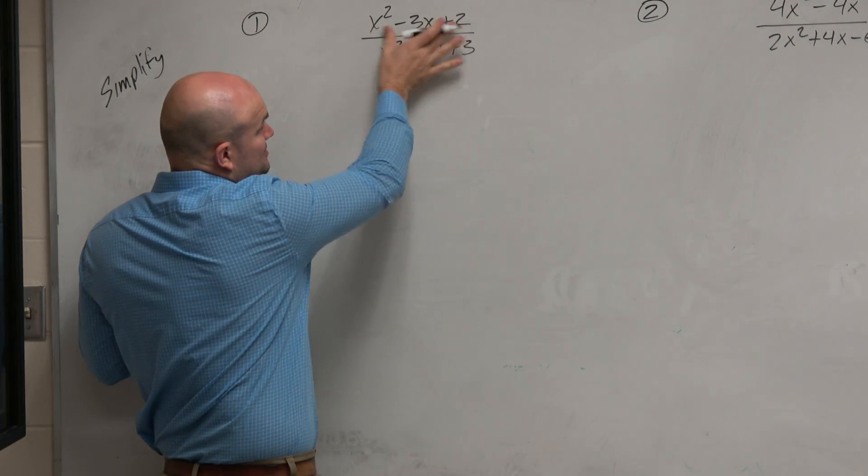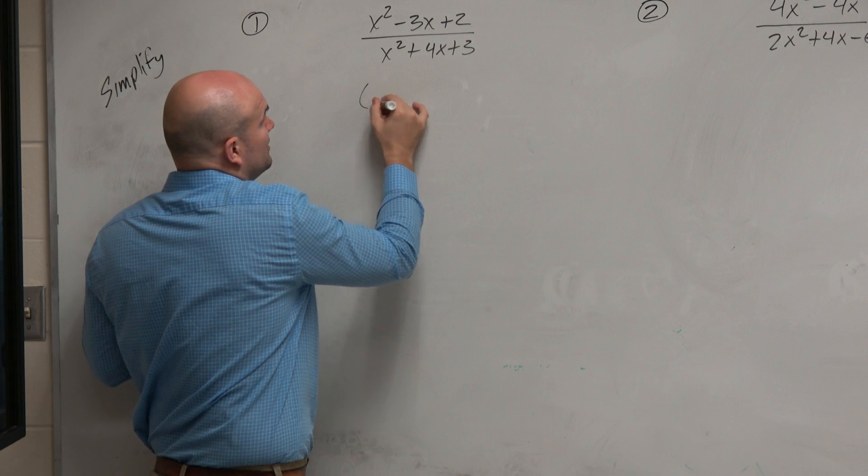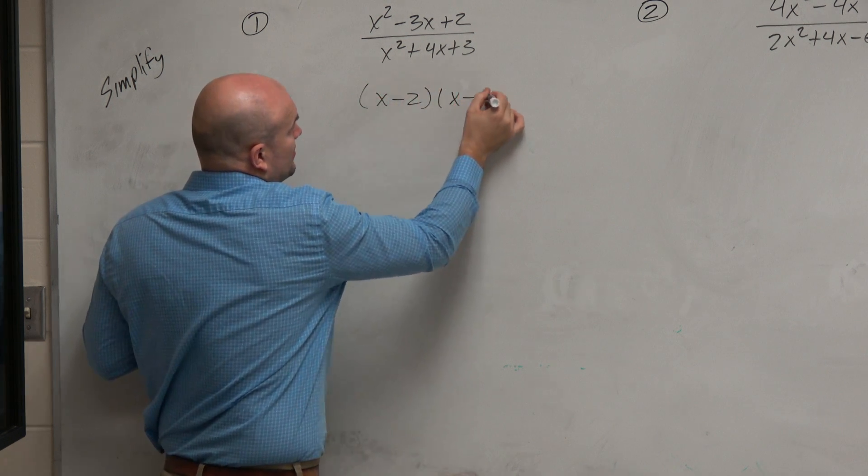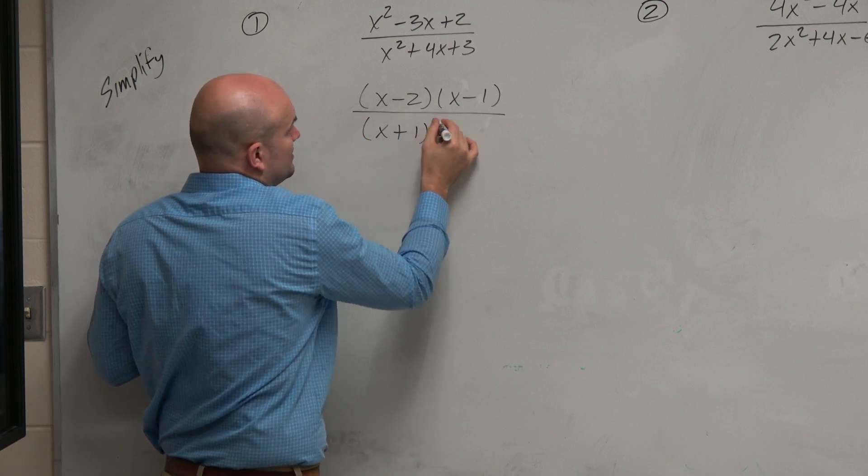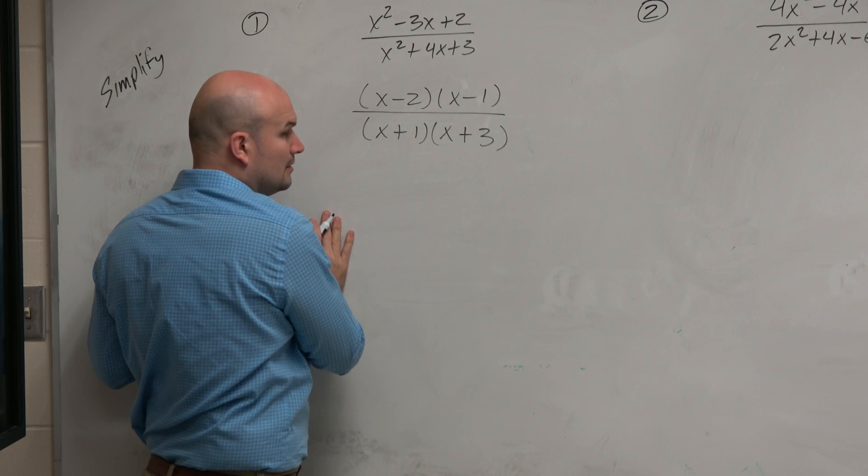What we can see is we can factor this numerator into (x-2) times (x-1), and we can factor the denominator into (x+1) times (x+3).